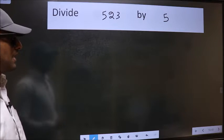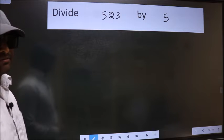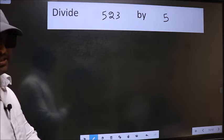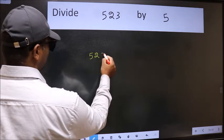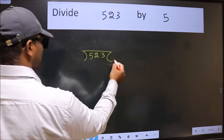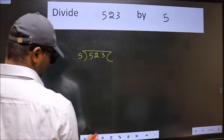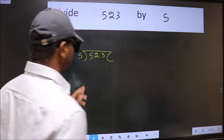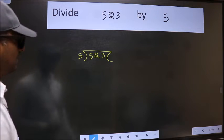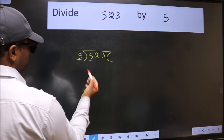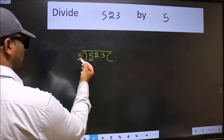Divide 523 by 5. To do this division, we should frame it in this way: 523 here and 5 here. This is your step one. Next, here we have 5 and here also 5. When do we get 5 in the 5 table?